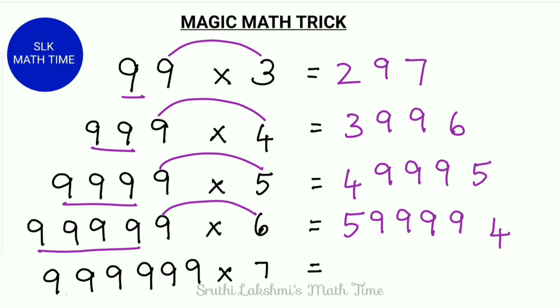Next, let's try 999999 into 7. So we do 9 into 7 which is 63. We write it with a little gap in between. How many 9's are there before this 9? There is 5 9's. So we write 5 9's over here in the middle.